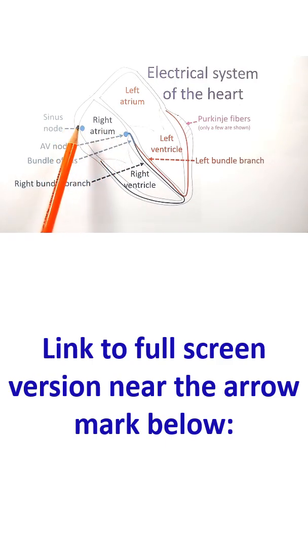There are three pathways between these two nodes which are small and have not been shown here. From the AV node, the signals pass through the bundle of His, passing through the junction between the atria and the ventricles.